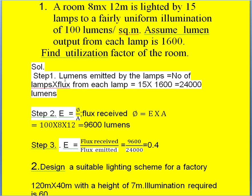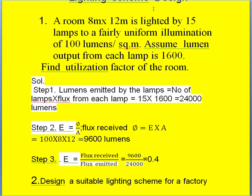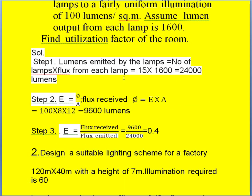First we calculate the lumens emitted by all the lamps. The number of lamps into the flux from each lamp: the lumens output from each lamp is 1600 and the number of lamps used are 15. So 15 into 1600 gives us 24,000 lumens output from these 15 lamps.